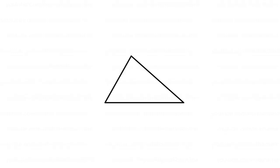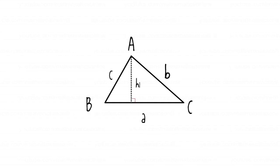To begin, we have a triangle with angles A, B, and C along with sides a, b, and c. Let's go ahead and label the altitude h1.